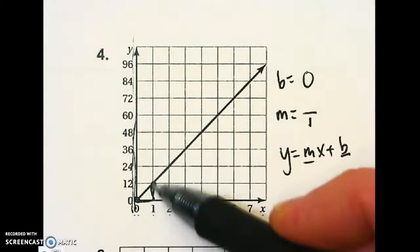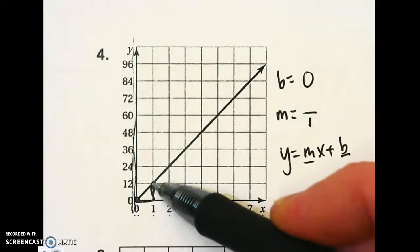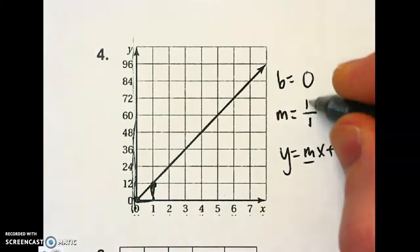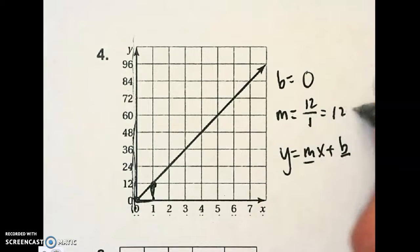But my rise was not one, even though I went up only one block. It was from zero to 12. So, this went up 12. That makes my slope reduced to 12.